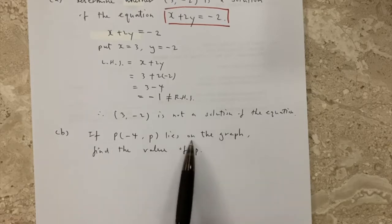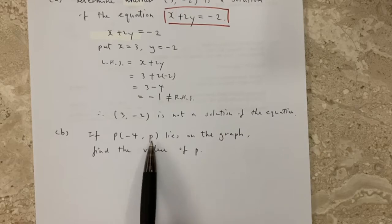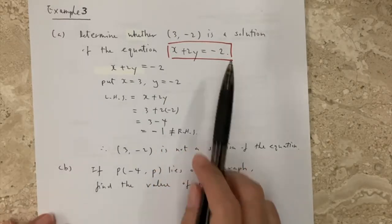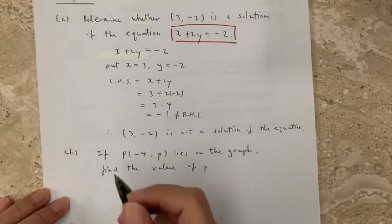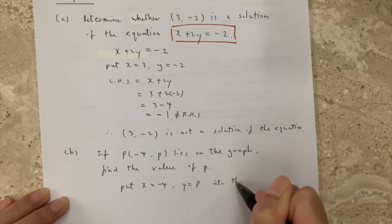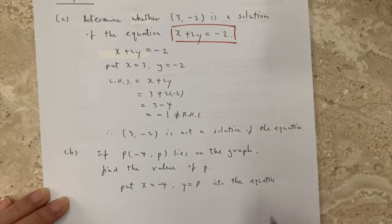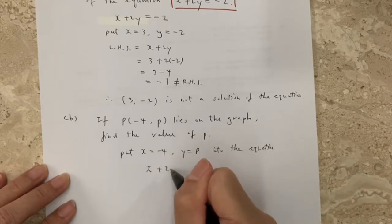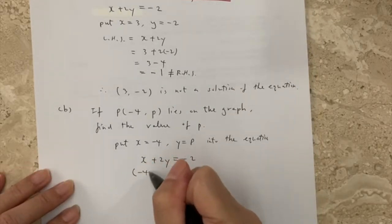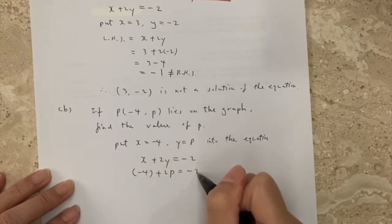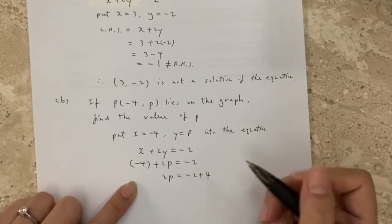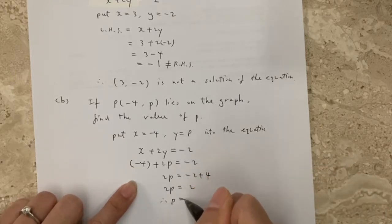For part B, point P has coordinates (minus 4, P) and lies on the graph. We need to find the value of P. We put x equals minus 4 and y equals P into the equation x plus 2y equals minus 2. So minus 4 plus 2P equals minus 2. Moving minus 4 to the right-hand side gives 2P equals minus 2 plus 4, which is 2, therefore P equals 1.